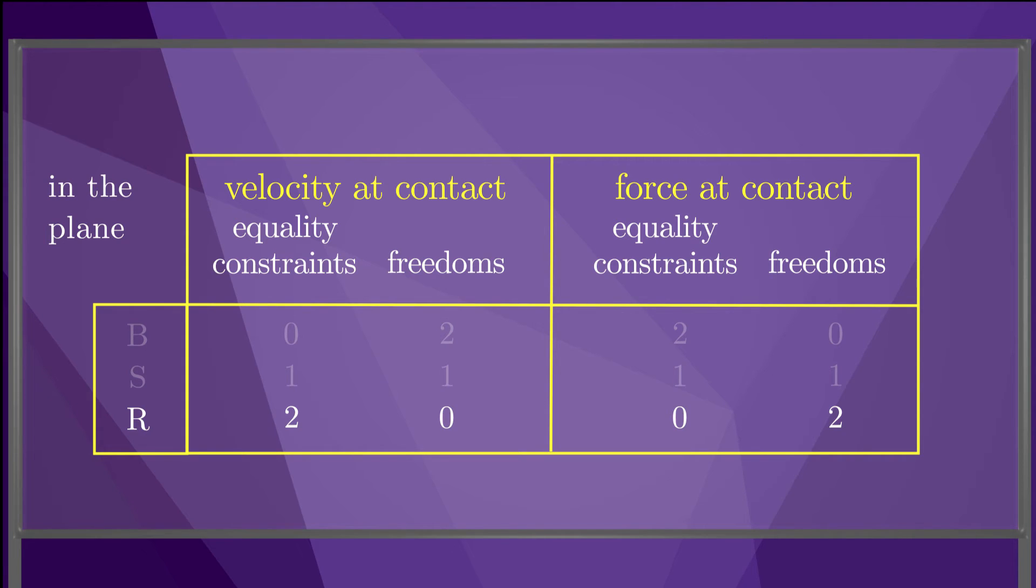So the full table for planar contacts looks like this. Notice that when we solve for the forces and velocities of rigid bodies in contact, the total number of equality constraints on motion and force is two for each contact label.